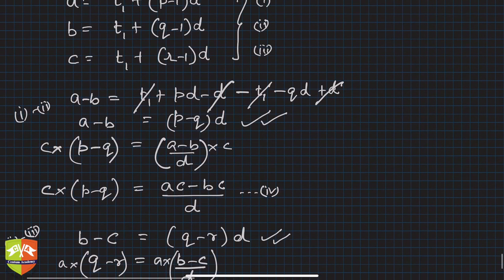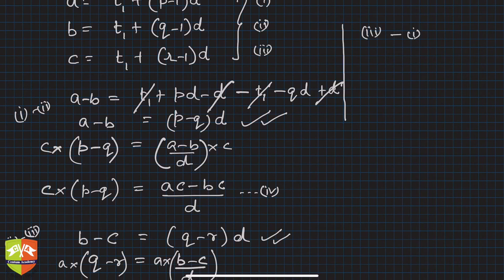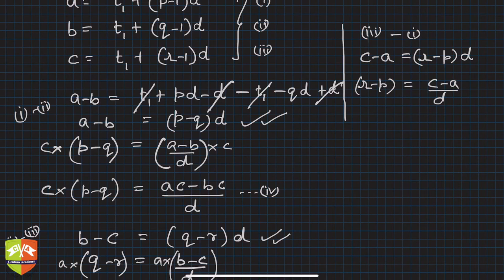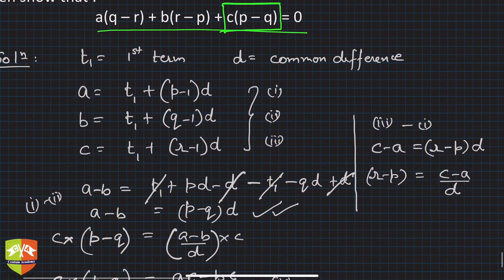Now here itself, let's do 3 minus 1. So you would have guessed it by now that it's a cyclical process. So c minus a would fetch you (r-p) times d. So again, from here we can find out r-p = (c-a)/d. And what term did we want? r minus p.